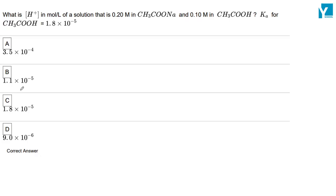The question is: what is the H⁺ ion concentration in mole per liter of a solution that is 0.2 molar in sodium acetate and 0.1 molar in acetic acid?